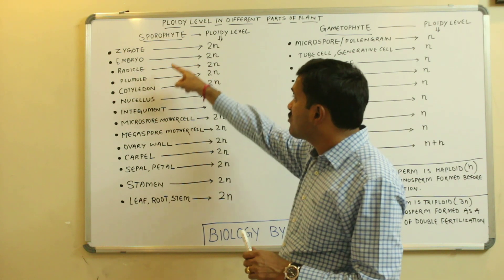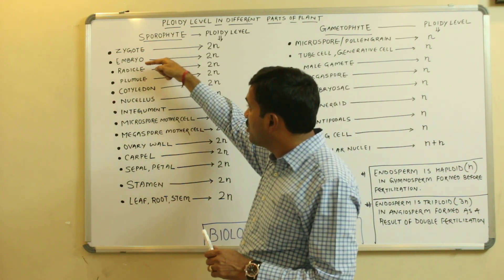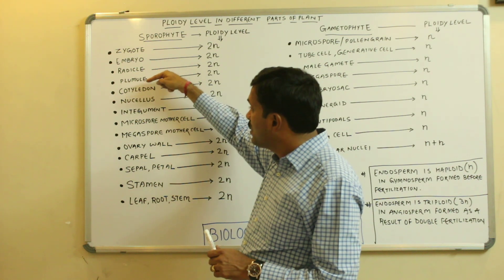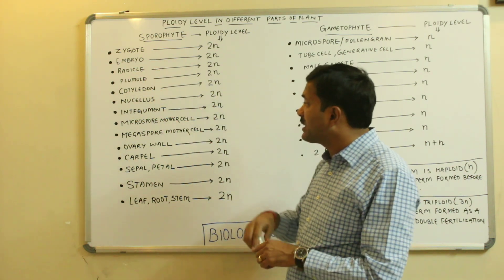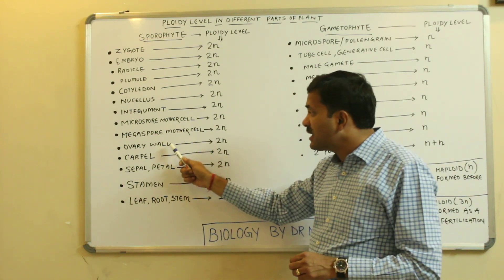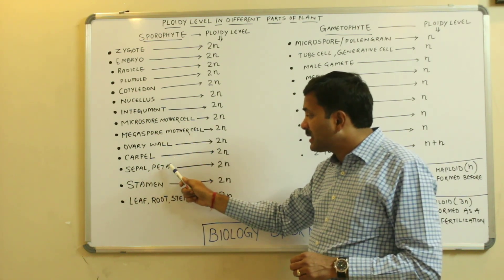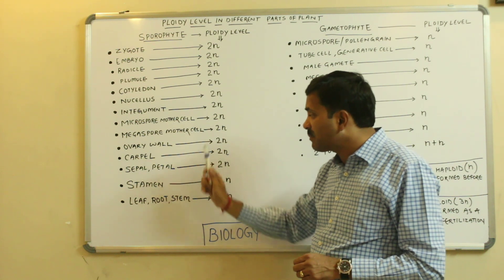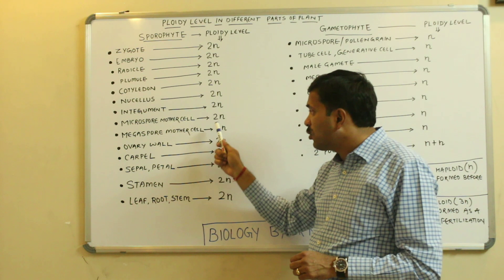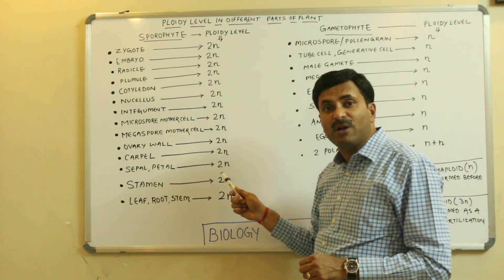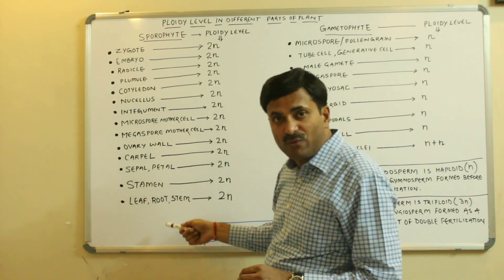So all these structures — zygote, embryo, radicle, plumule, cotyledon, nucellus, integument, microspore mother cell, megaspore mother cell, ovary wall, carpel, sepal, petal, stamen, leaf, root, and stem — all have the ploidy level of 2N. All these parts are sporophyte.